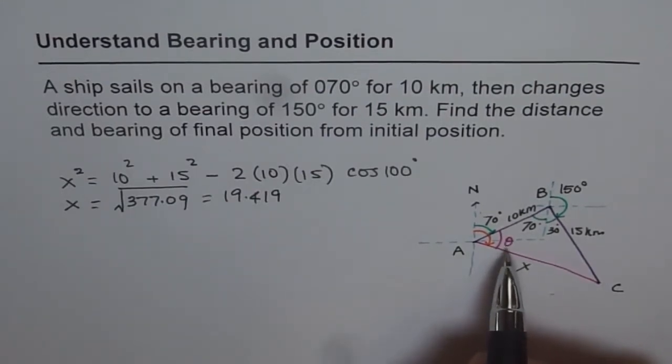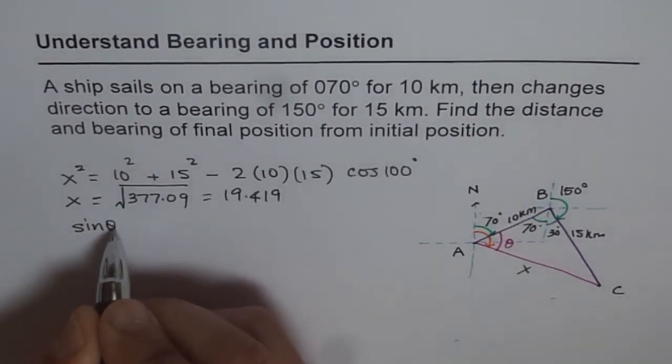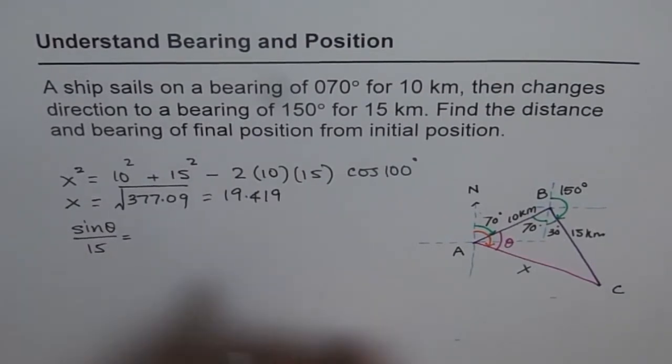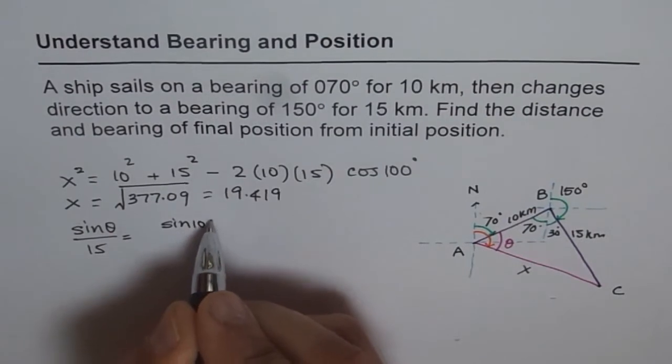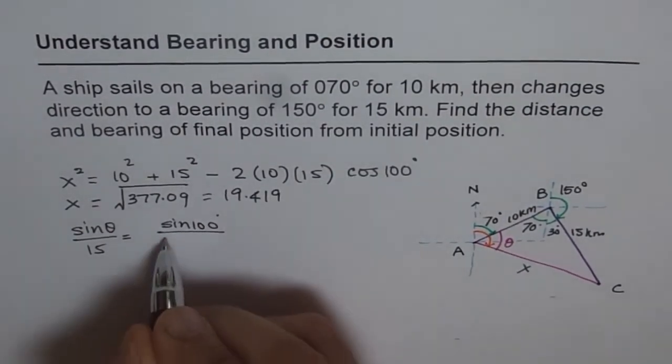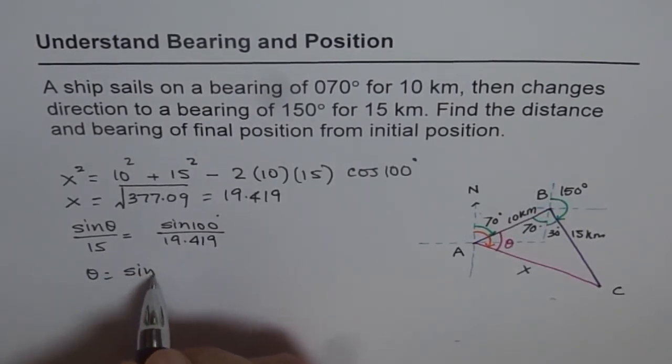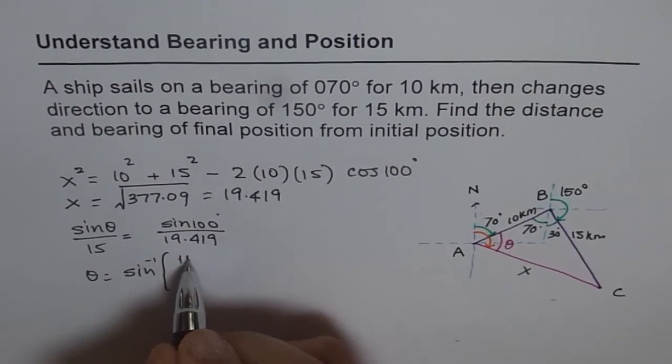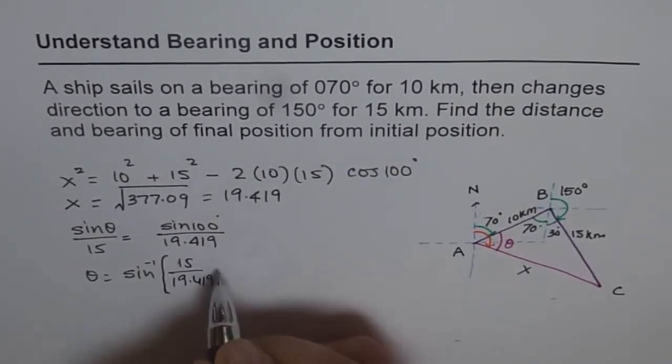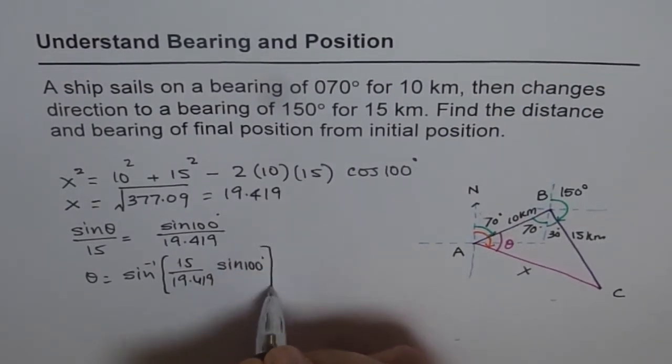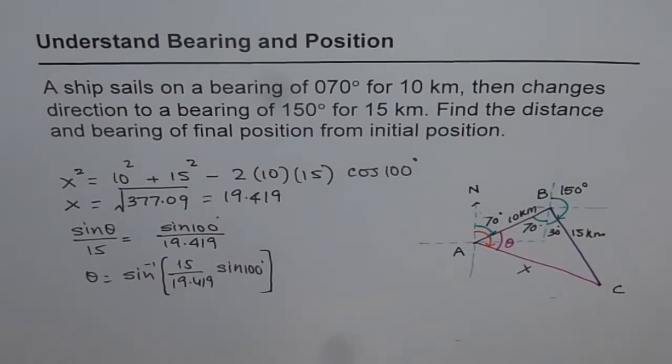So sine theta, you want this angle, so we will put this on the top. That is sine of theta over the side opposite, which is 15, equals to known angle, which is sine of 100, equal to the opposite side, which is 19.419 for us. So from here, theta is equal to sine inverse of all this, so 15 divided by 19.419 times sine 100. Normally, you should do four decimal places to get accurate answers. So we will do sine inverse, second function, sine inverse within brackets, 15 divided by 19.419 times sine of 100, bracket close.